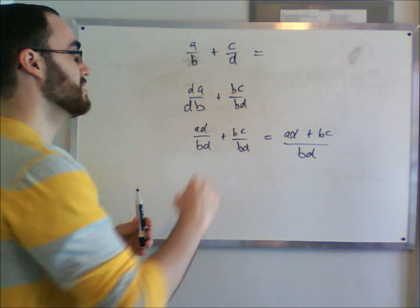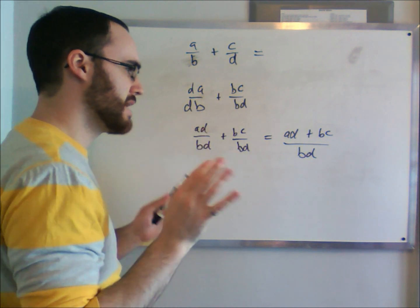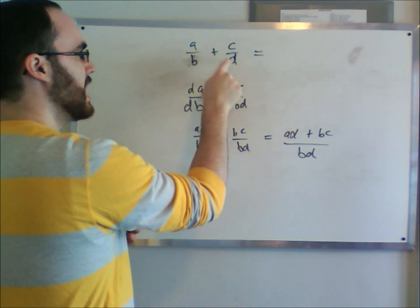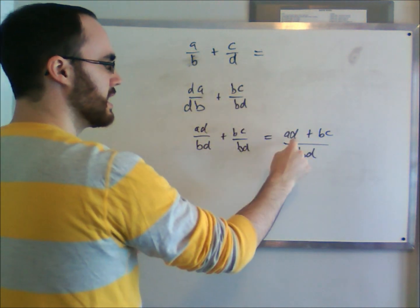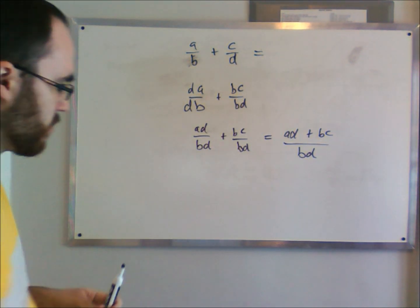So to let that sink in for a second, you're sort of cross-multiplying what happens here. Cross-multiplying is a bad term really, but you've got B times D as the denominator, and you've got A times D and B times C. And those are our numbers that go on the top, the numerator. So that's how that works.